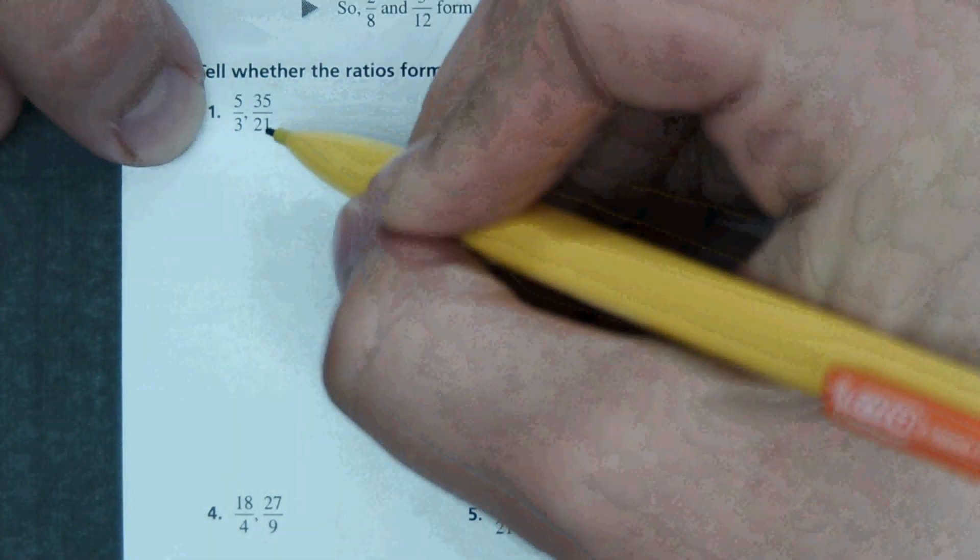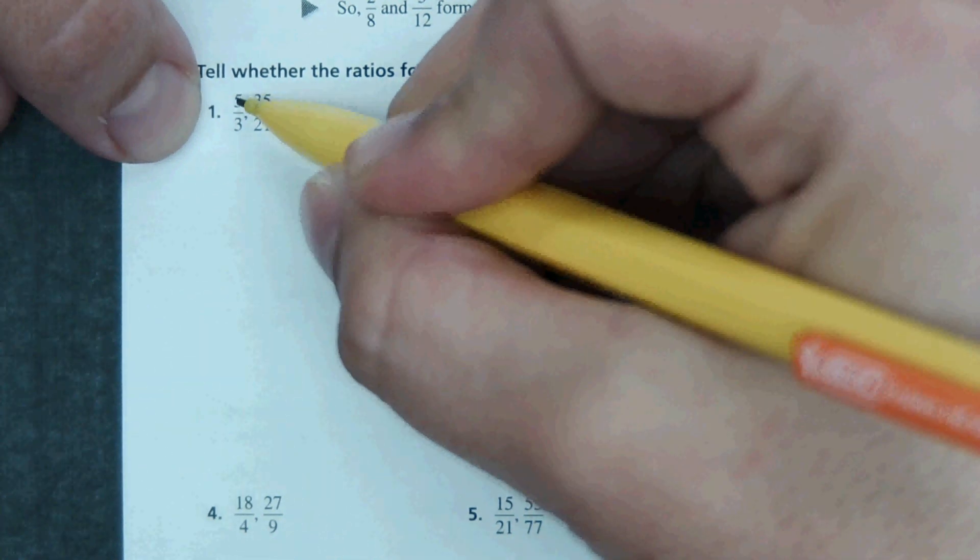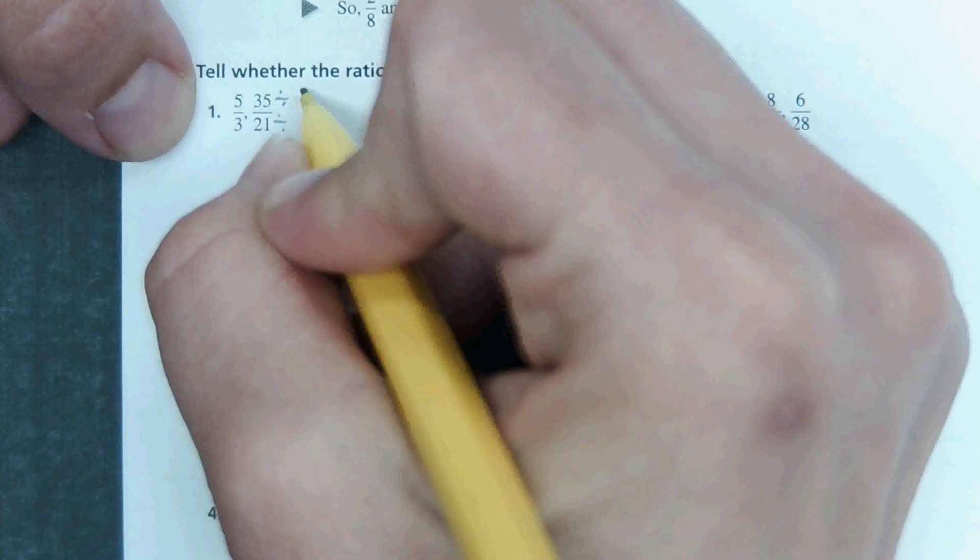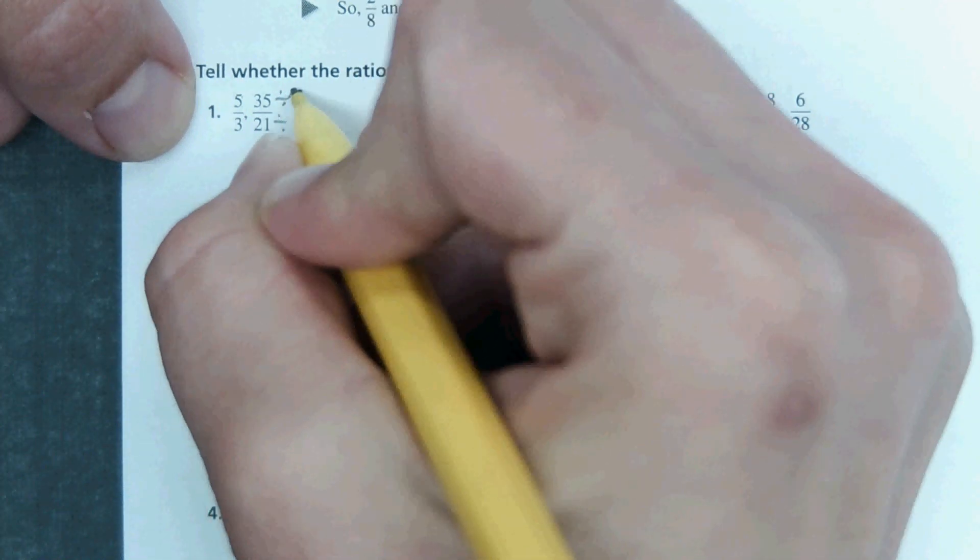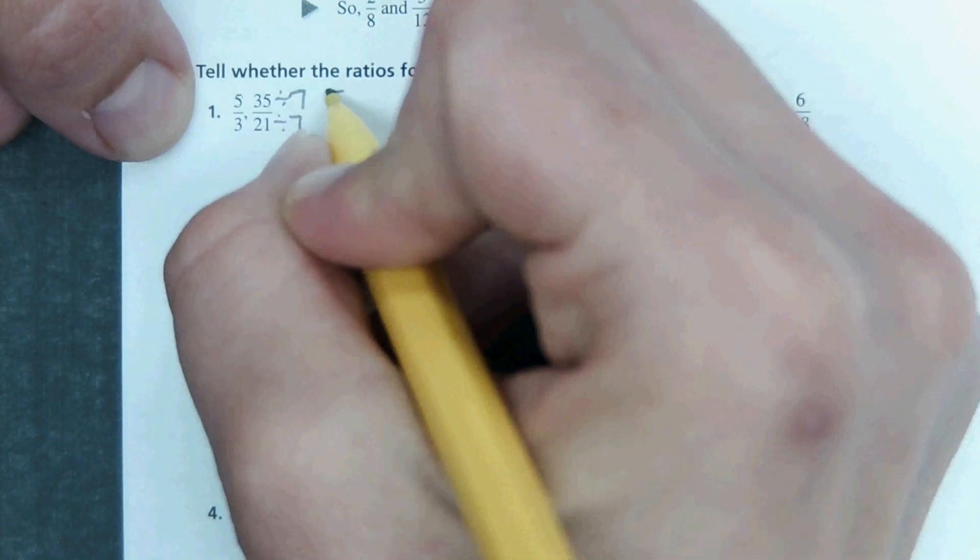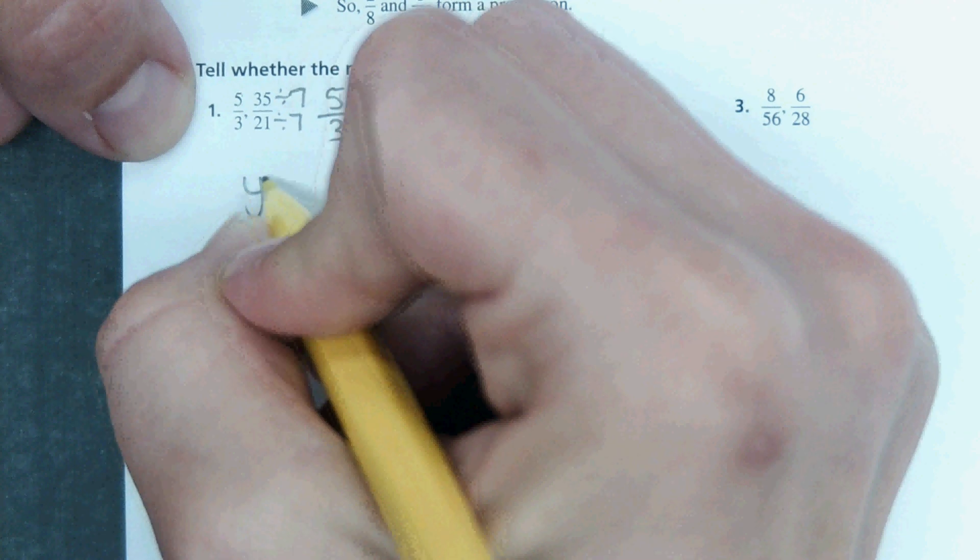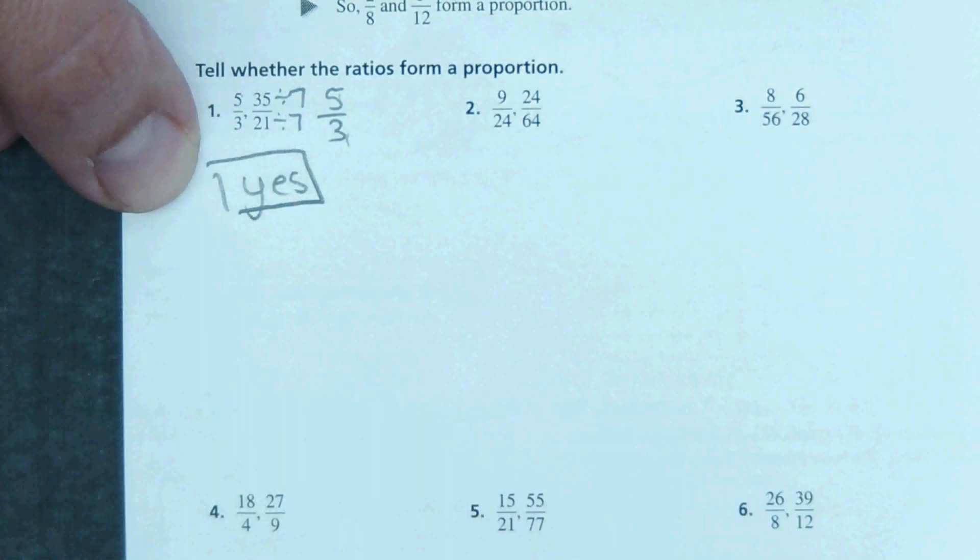So for number one, it says tell whether these ratios form an equal proportion or are in equal proportion. We have 5 over 3 and 35 over 21. One way to determine if these are equal would be to divide this by the greatest common factor and it reduces. So we divide by 7 and it reduces to 5 over 3, and 5 thirds is equal to 5 thirds. So yes, those two ratios are proportional.